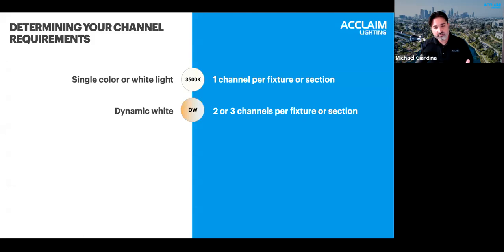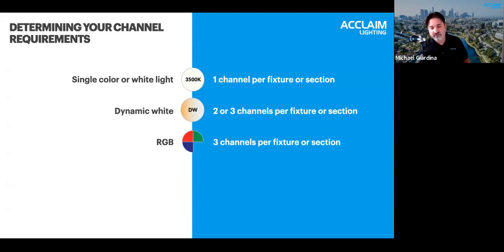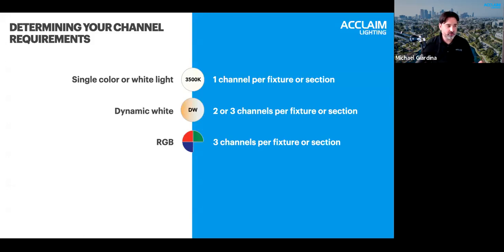So single color is one channel per fixture, dynamic white is two or three channels per fixture. Moving on to color changing — when we have an RGB fixture, it's three channels per fixture or section. On a pixel-controlled product, you may have many small RGB sections within a defined area; for example, a four-foot fixture could have four to eight individually RGB-controlled sections.